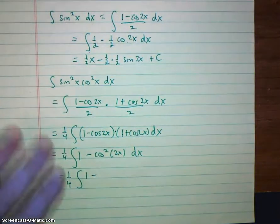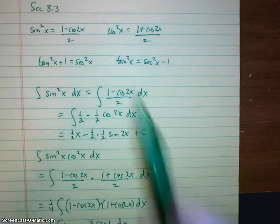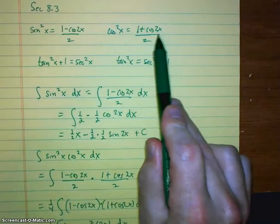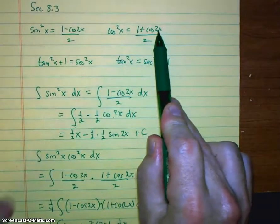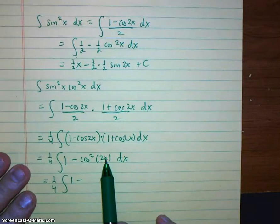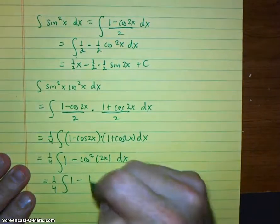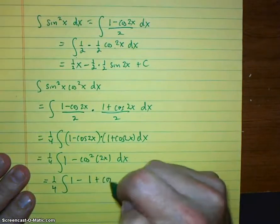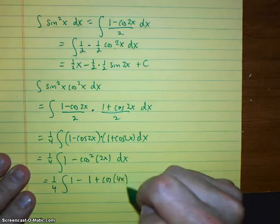So look what happens. When this is an x, this becomes a 2x. When this is a 2x, it's going to become a 4x. It doubles every time. So this is going to be 1 plus cosine 4x over 2.